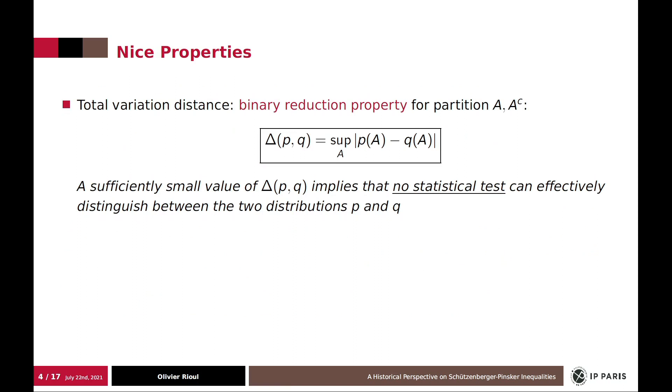So all these are supposedly well-known. And so we have two nice properties, one for delta and one for D. For delta, we have this binary reduction property. That is, delta is already attained for binary partitions. Which implies that if delta is sufficiently small, then there is no statistical test that can be used to effectively distinguish between the two distributions. So that's why the total variation distance is probably the most used in many areas, for example, in computer science.